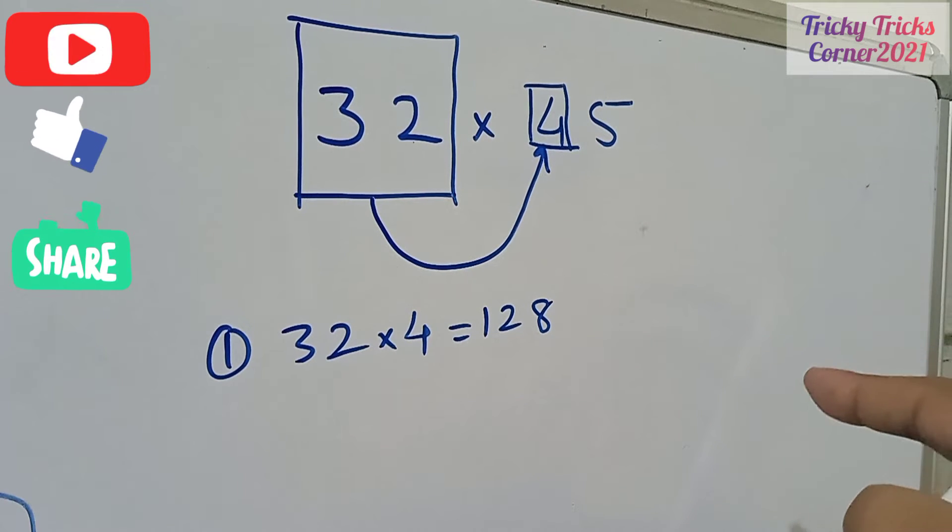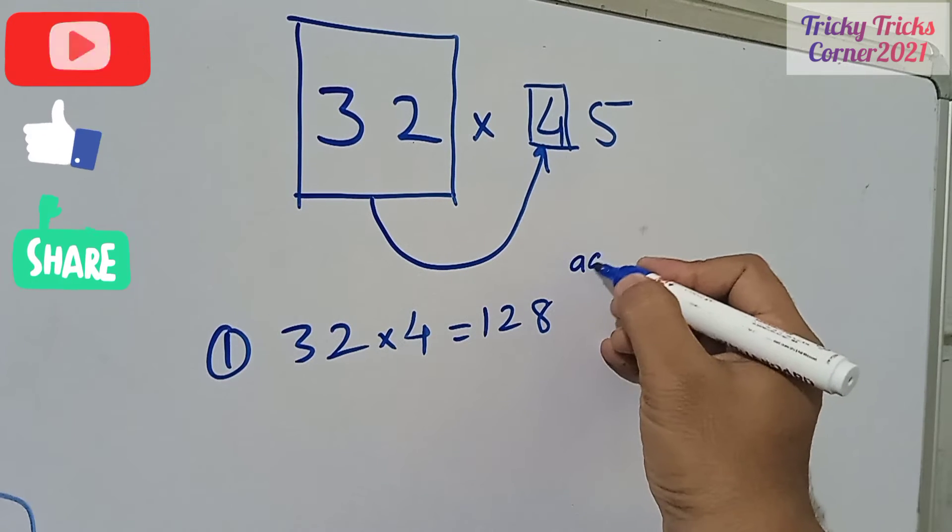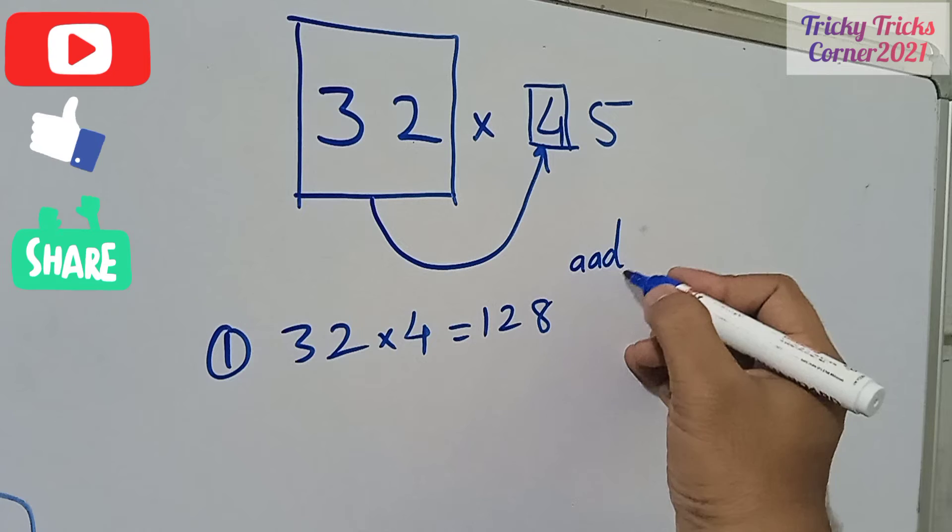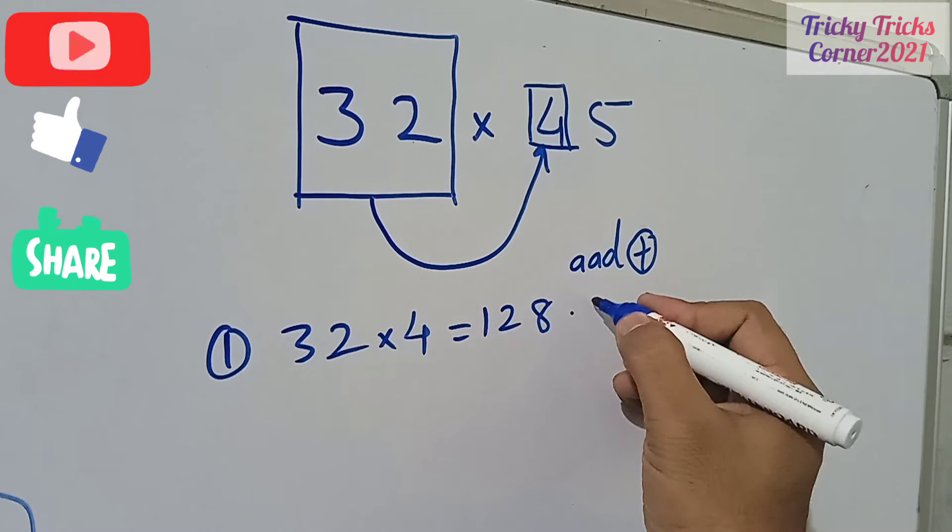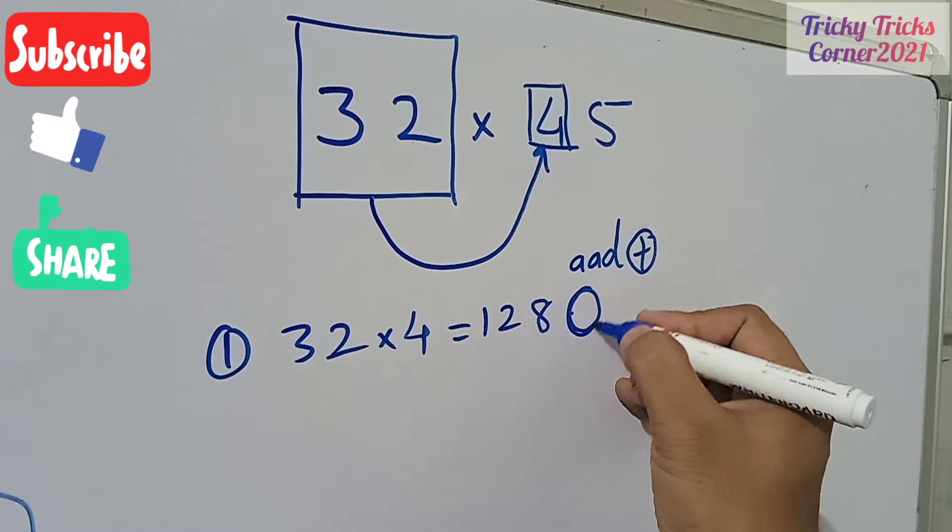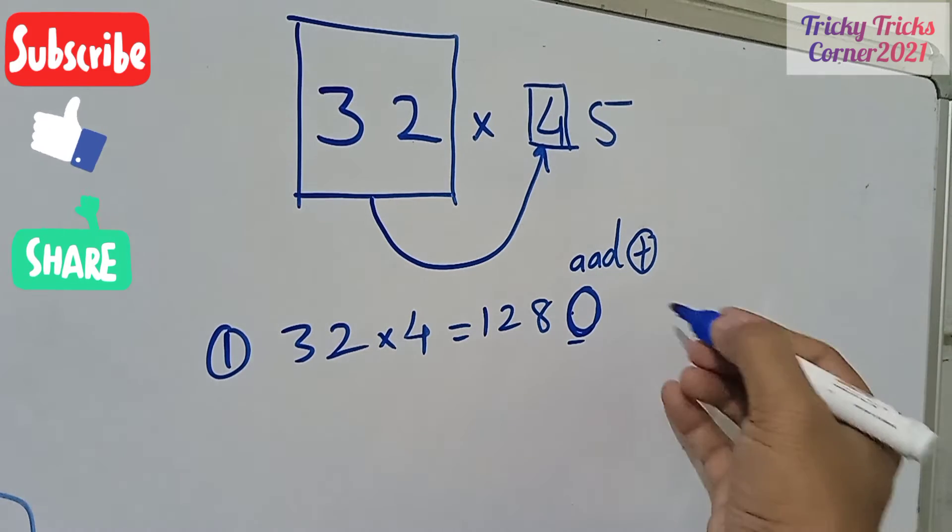Whenever this number you got here, add, or write down here plus, always 0 at the last. Now this number will become 1280.